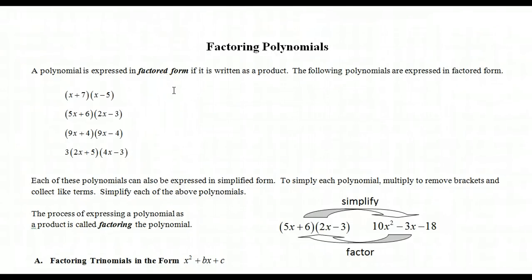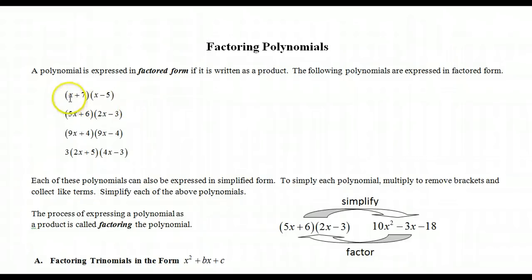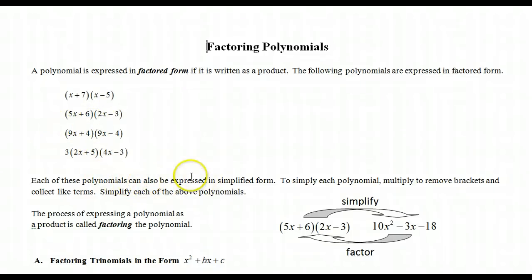Factoring polynomials. A polynomial is expressed in factored form if it's written as a product. The following polynomials are expressed in factored form, such as x plus 7 times x minus 5. Each of these polynomials can also be expressed in simplified form. To simplify each polynomial, multiply to remove brackets and collect like terms.